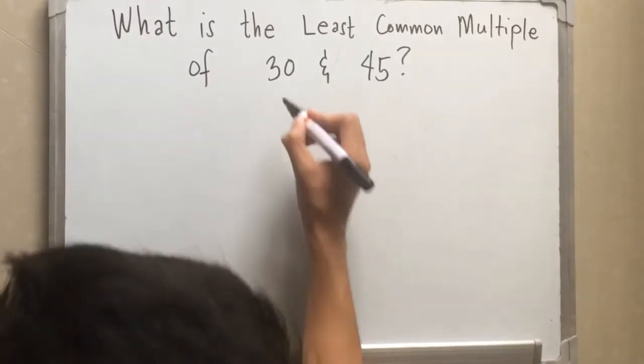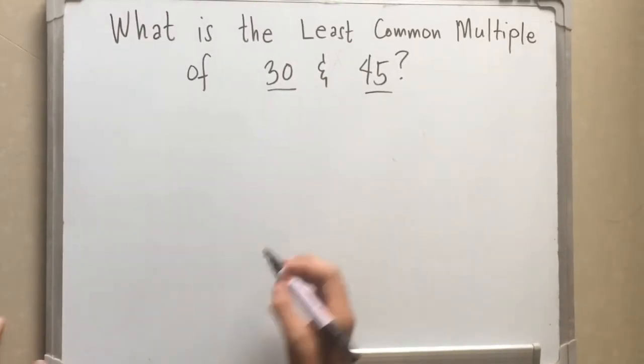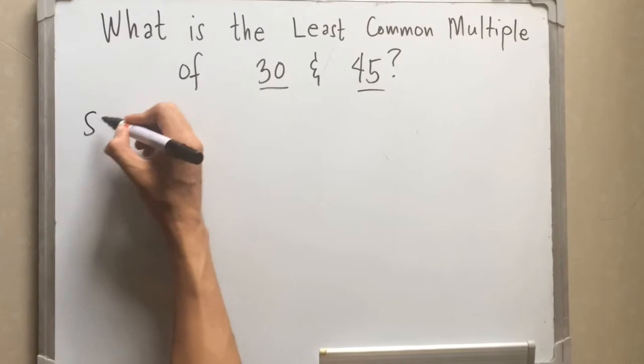Today we are going to get the least common multiple for 30 and 45. This is going to be our solution.